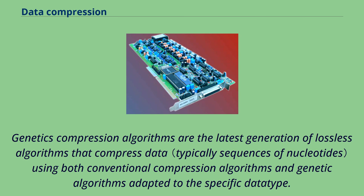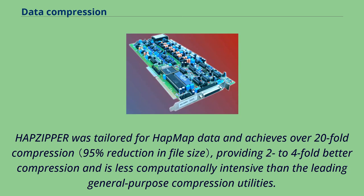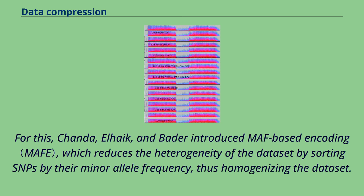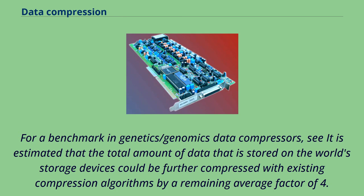Genetics compression algorithms are the latest generation of lossless algorithms that compress data using both conventional compression algorithms and genetic algorithms adapted to the specific data type. In 2012, a team of scientists from Johns Hopkins University published a genetic compression algorithm that does not use a reference genome for compression. Hapsifier was tailored for HapMap data and achieves over 20-fold compression, providing 2- to 4-fold better compression and is less computationally intensive than leading general-purpose compression utilities. Shanda, L. Hayek, and Bader introduced MAF-based encoding, which reduces the heterogeneity of the dataset by sorting SNPs by their minor allele frequency. Other algorithms from 2009 and 2013 have compression ratios of up to 1,200-fold, allowing 6 billion base-pair diploid human genomes to be stored in 2.5 megabytes. It is estimated that the total amount of data stored on the world's storage devices could be further compressed with existing algorithms by a remaining average factor of 4.5 to 1.